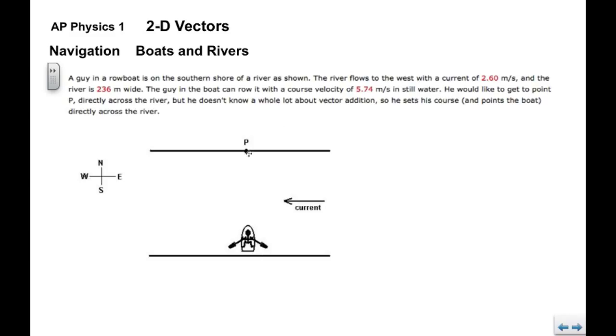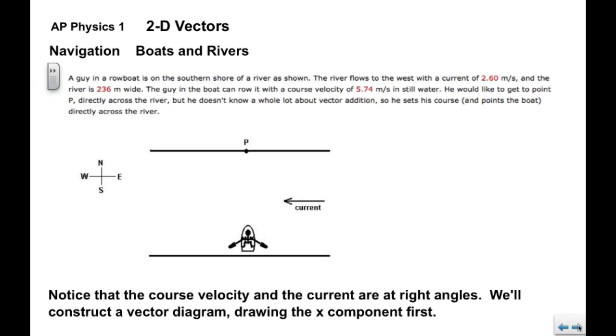He doesn't know a whole lot about vector addition, so he sets his course and he points the boat directly across the river. Now you'll note that the course velocity, he points the boat straight across the river, so he points the boat to the north. Current is to the west, so they're at right angles.